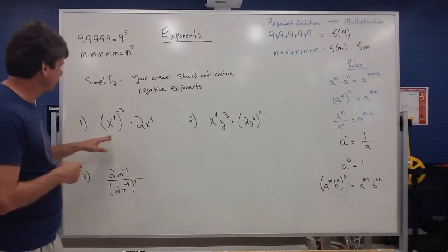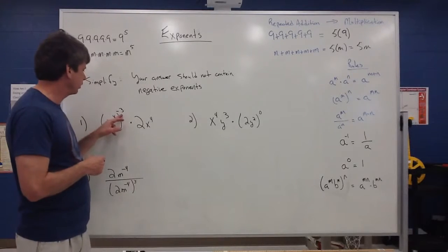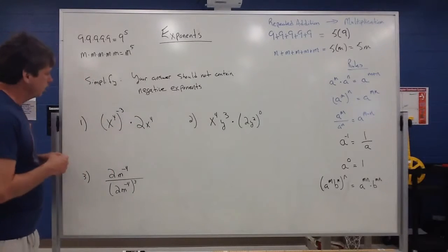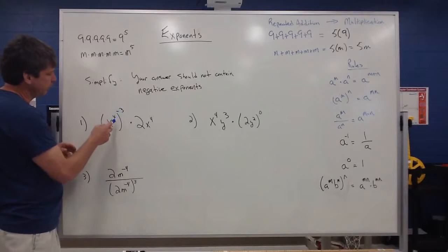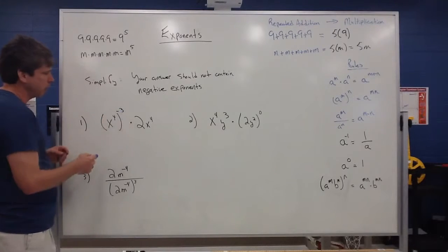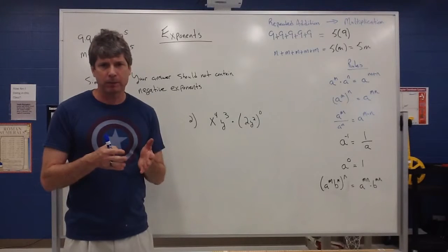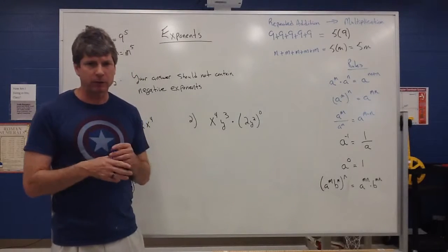So let's look at this first one. I have x to the fourth raised to the negative third times then 2 times x to the fourth. Now, I do see a negative exponent, but since this is a power to the power, I don't mind multiplying integers, positive and negative numbers.